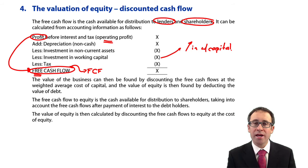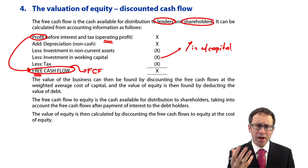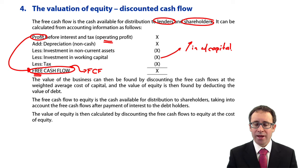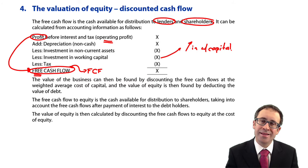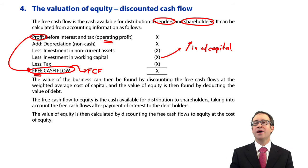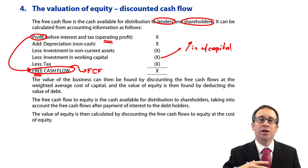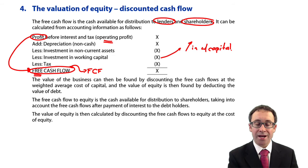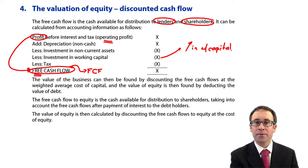After that, we deduct any tax payments. The way we calculate the tax payment is simply to take the operating profit and multiply it by the tax rate — nothing more complicated than that. You're not expected to do a full tax computation; just multiply profit by the tax rate and deduct that cash flow. Once you've done all those adjustments, that gives you your free cash flow — the cash available to debt holders to be paid as interest and shareholders to be paid as dividends.